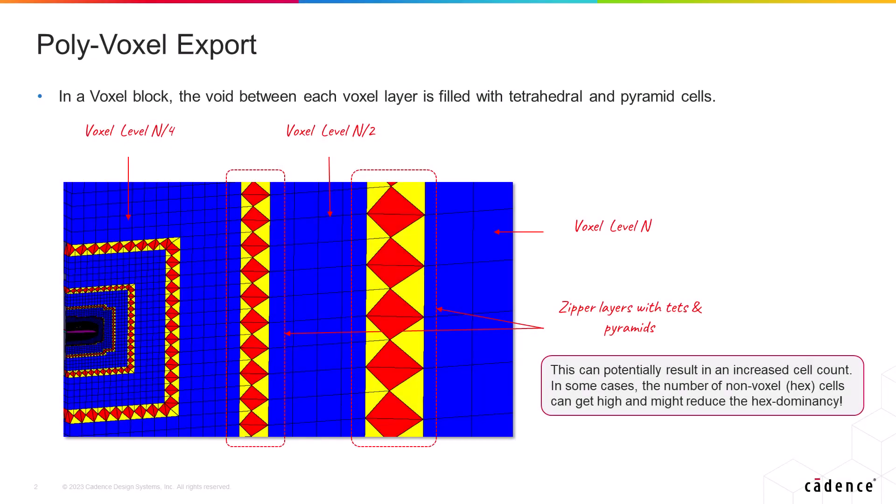Voxel blocks are blocks composed of hierarchical Cartesian cells, which are clustered about and sized by the enclosed size field influencers — whether that be a domain, a T-Rex front, or a source. Those root voxel cell sizes are specified for the block and recursively subdivided, and the subdivision stops when the voxel cell sizes match the local size field.